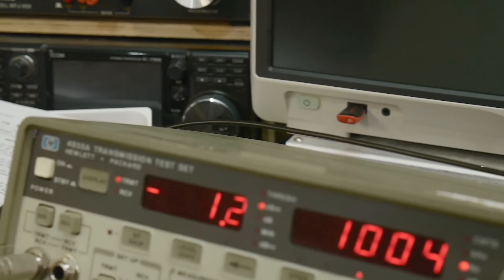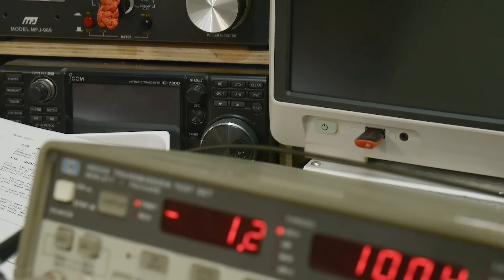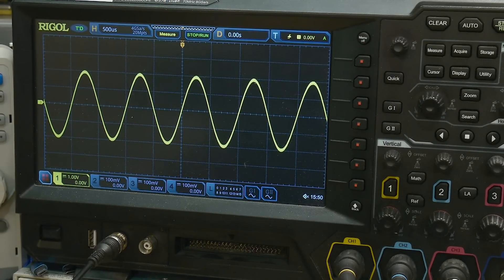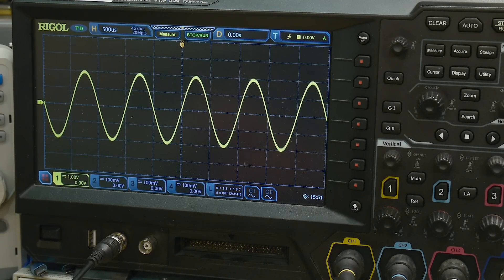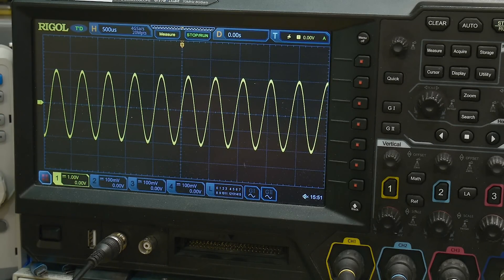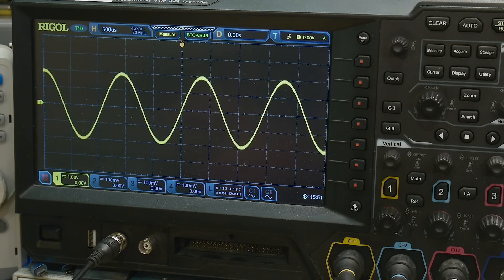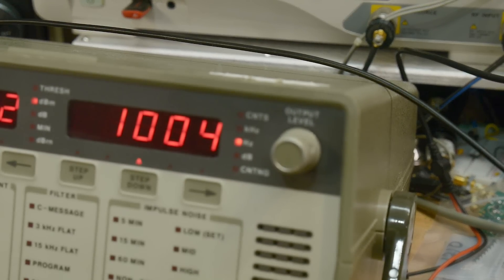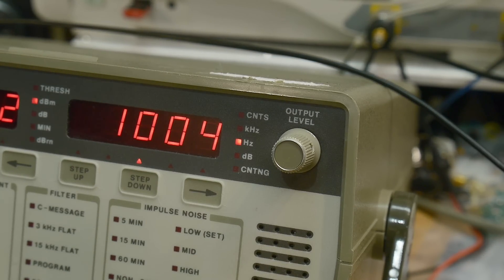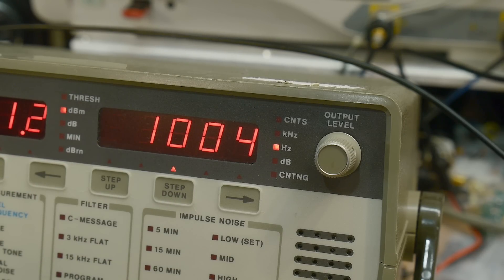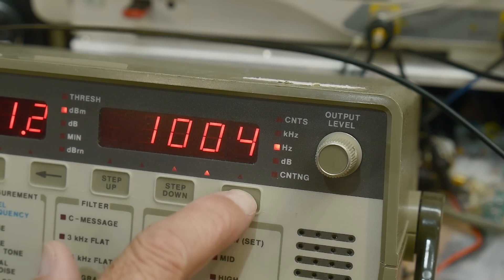We're getting minus 1.2 dBm, so we should be terminated with 600 ohms. We're not, so things aren't going to work out mathematically, but just to get the idea that we can change frequency and amplitude. Now you may have noticed that the frequency started out at 1004. There's a reason for that—they say that some particular telephone circuits don't like a thousand hertz, so they always offset it by four hertz just to get out of any problems.